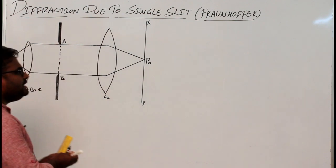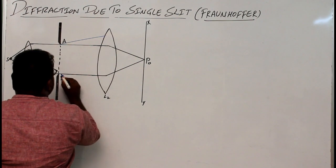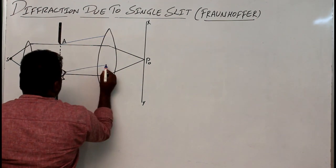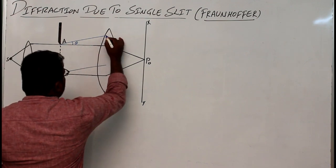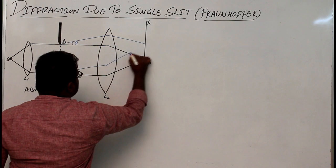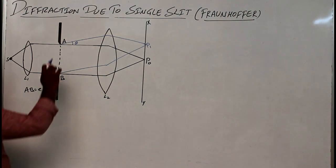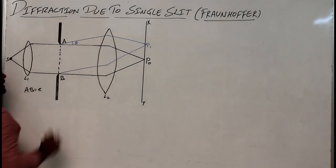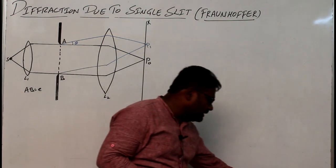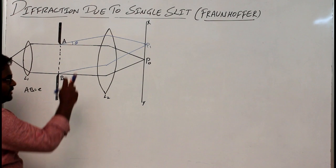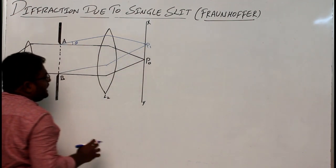Now let's see what happens to the light rays which travel with deviation. Suppose from the slit they travel with a deviation of angle θ; these light rays will focus at point P1 on the screen. These are the light rays that traveled with deviation — with angle θ — bending at the edges of the obstacle, focusing at point P1. Whether P1 is bright or dark depends on the path difference between the two deviated light rays.